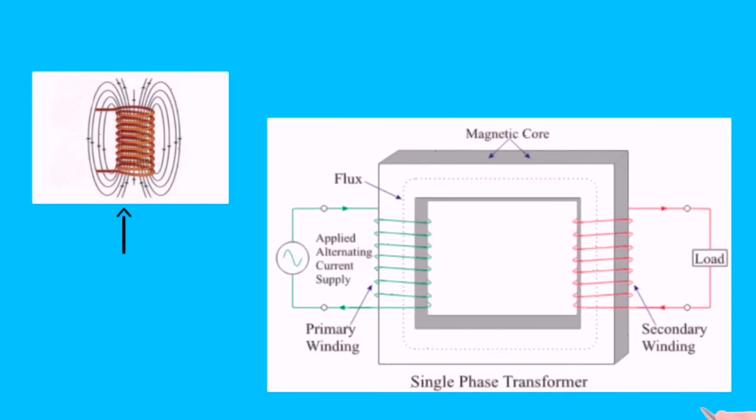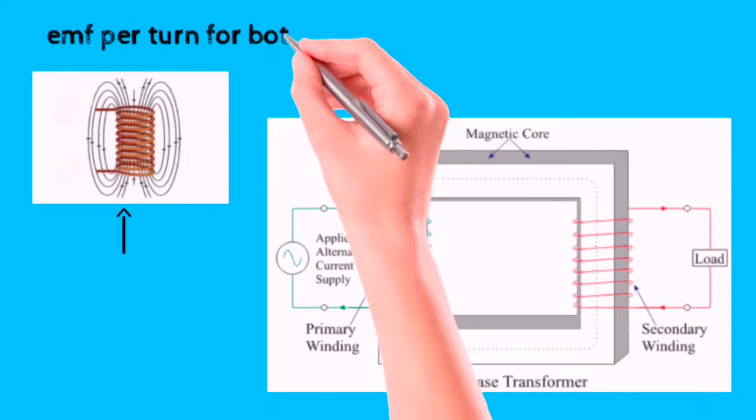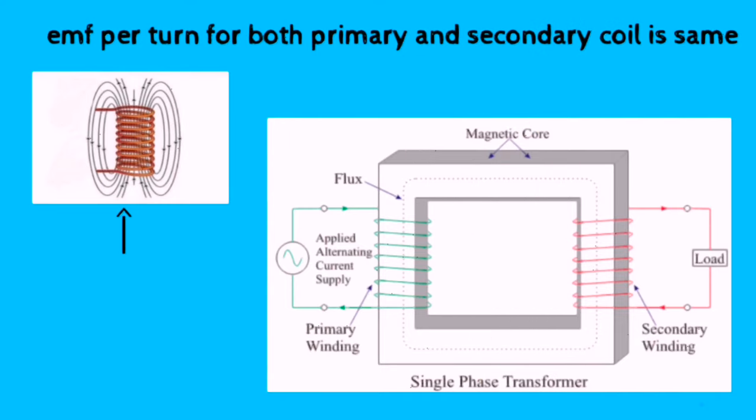Since the same magnetic flux is passing through the primary and secondary coils, the EMF per turn for both primary and secondary coils will be the same.